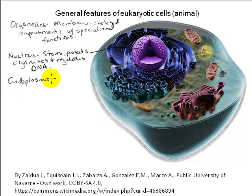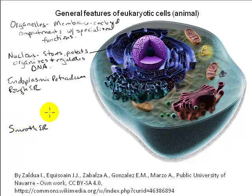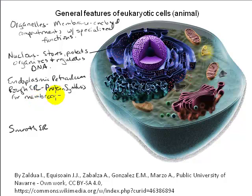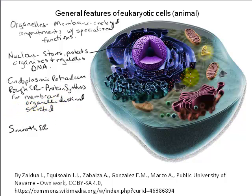Outside of the nucleus is a convoluted membrane-enclosed compartment called the endoplasmic reticulum, which can be subdivided into two types: rough endoplasmic reticulum, or rough ER, so-called because its surface is studded with ribosomes, and smooth endoplasmic reticulum, which lacks ribosomes. Proteins that are membrane-embedded, destined for specific cellular organelles, or destined to be secreted from the cell are synthesized at the rough ER, whereas general cytoplasmic proteins are synthesized by free ribosomes in the cytoplasm.